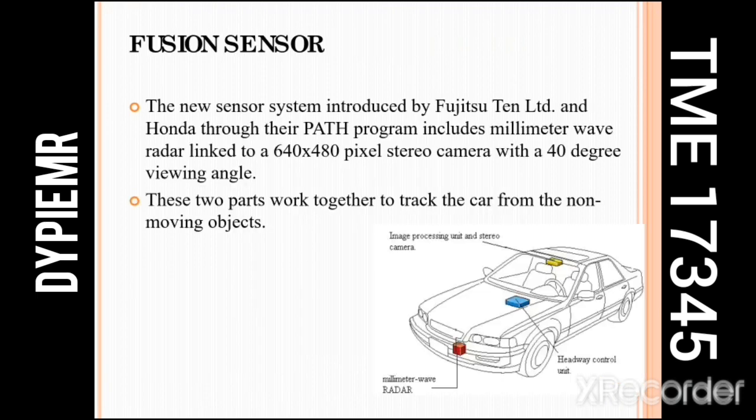The fusion sensor was introduced by Fujitsu Ten Limited and Honda. In this system, the radar is assisted by a stereo camera with a 40-degree viewing angle. These two devices fuse together to detect obstacles.